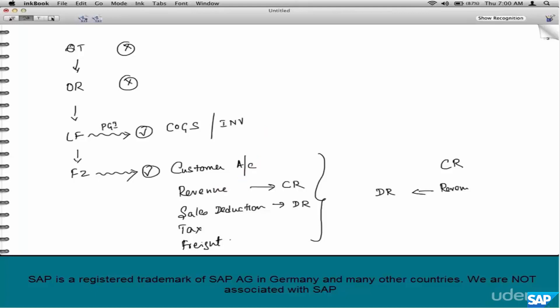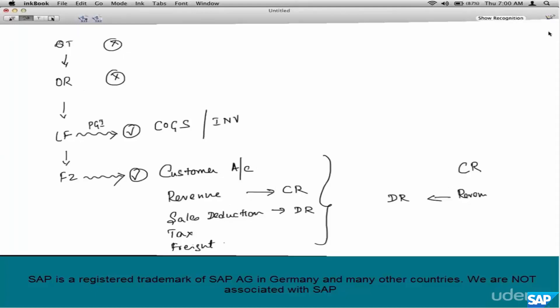Cost of goods sold, inventory during PGI. A whole bunch of other accounts like revenue, customer recon, tax, freight, etc. during invoicing. So that finishes the accounting basics for us.